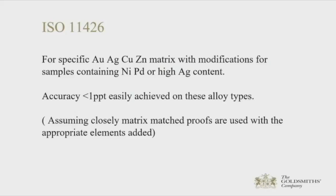ISO 11426 describes a method of analysis for gold content in simple matrices such as gold, silver, copper, zinc alloys, with modifications for nickel, palladium, and high silver content. A high degree of accuracy — less than one part per thousand by mass as specified by the standard — can be achieved with these alloy types, assuming that closely matrix-matched proofs are run in parallel.